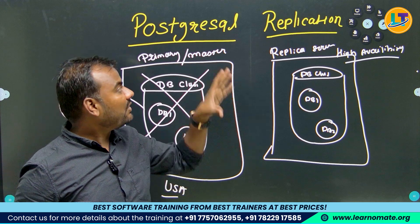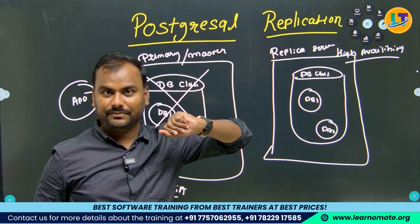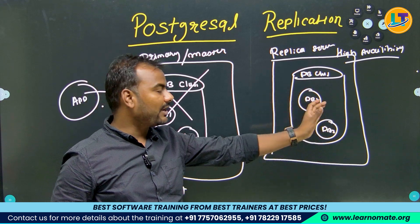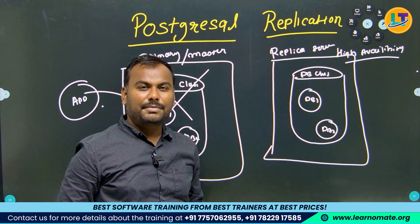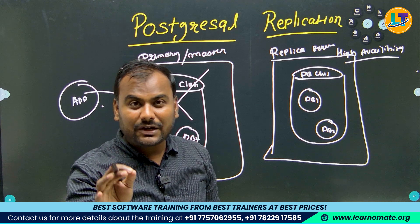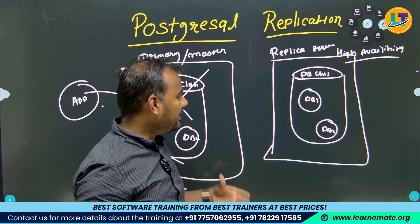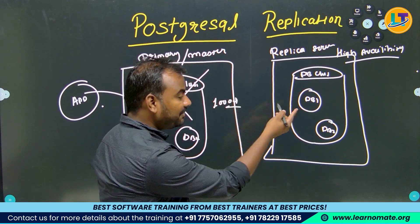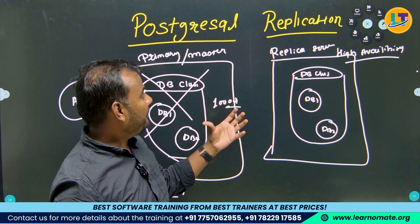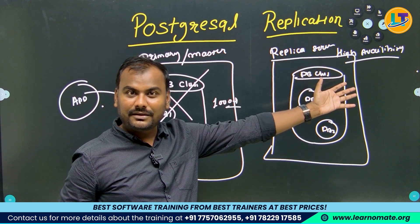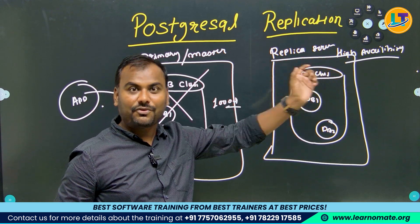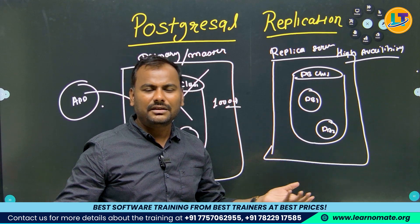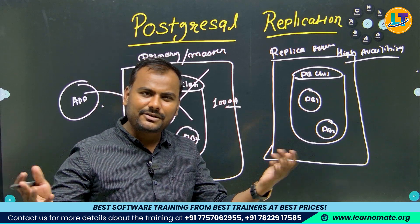So this is the main importance of PostgreSQL replication. Now you can have multiple replica servers — it's not like you can have only one, you can have multiple also. But remember, when configuring it, it is not free of cost. Let's say you were spending $1000 earlier, now you need to spend $2000. We are getting high availability, but for that the client needs to spend some money. And the client is earning also, so he can spend some money — there is no problem.